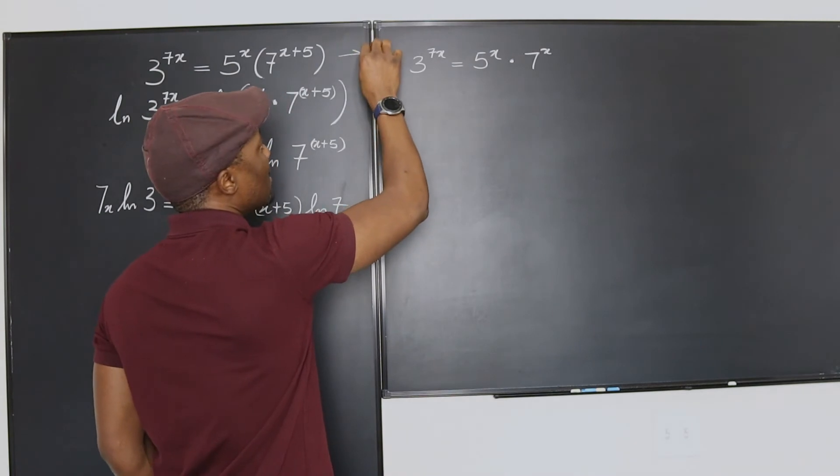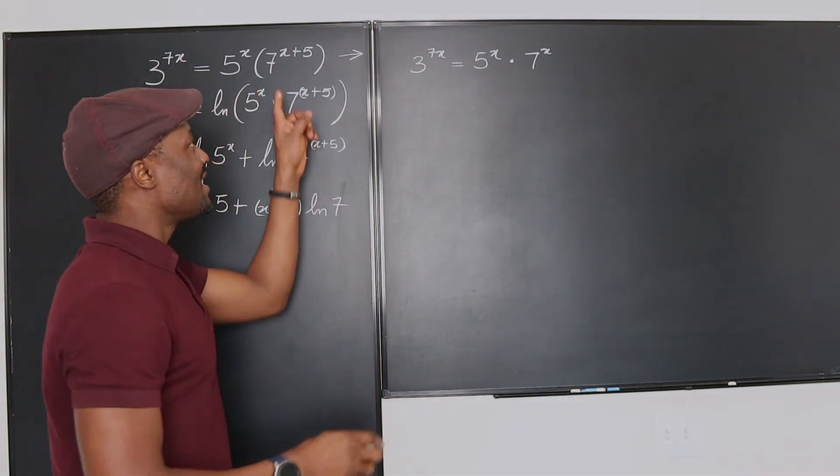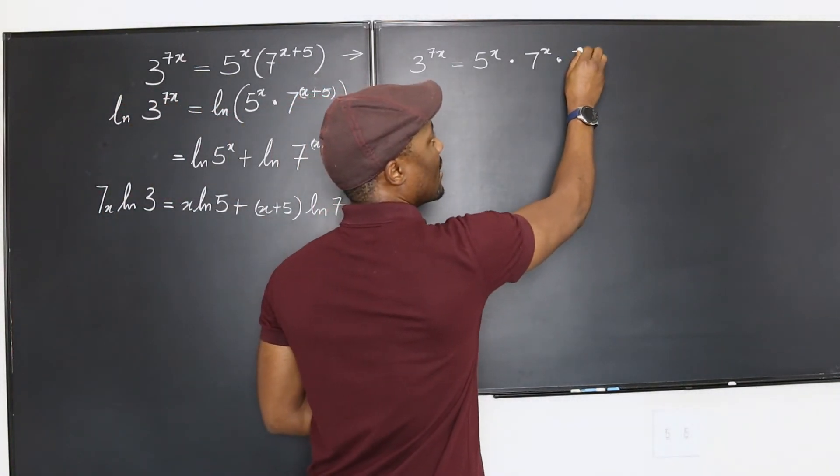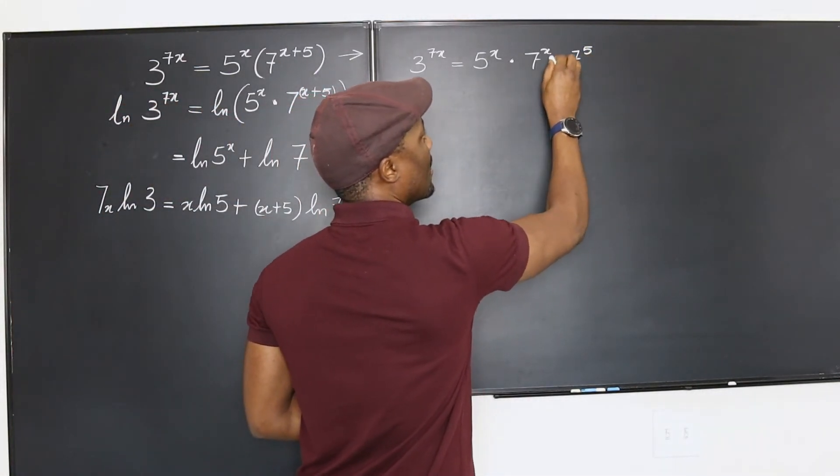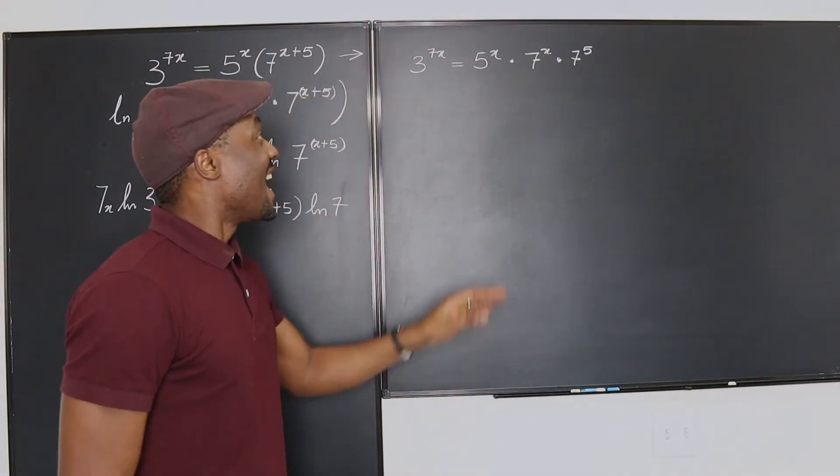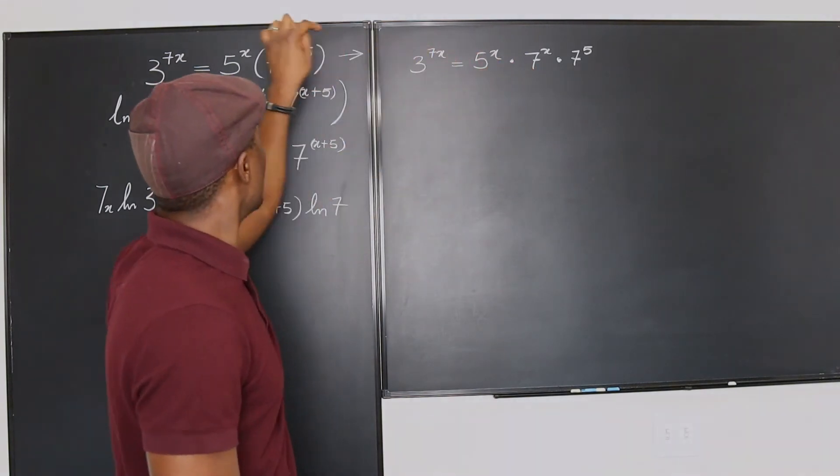You see, I'm trying to relate this to this. This actually means 7 to the x times 7 to the 5th, like this. That's what it means. Exactly what you have here was this question.